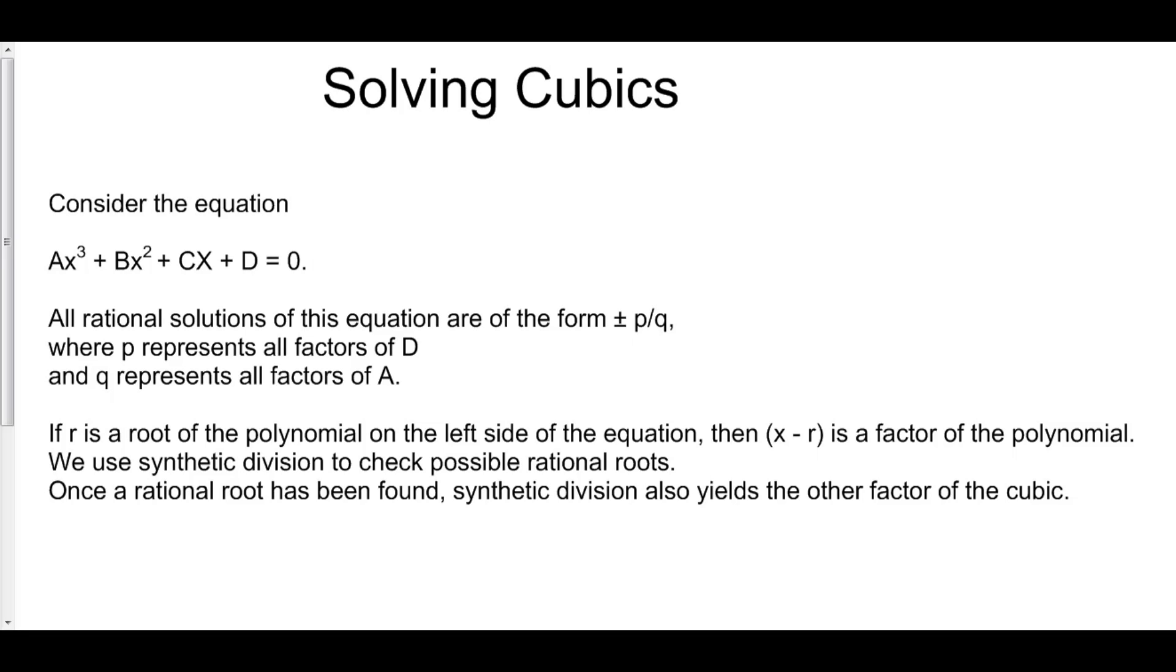Consider the equation ax³ + bx² + cx + d = 0. All rational solutions of this equation are of the form ±p/q, where p represents all factors of d and q represents all factors of a. If r is a root of the polynomial on the left side of the equation, then x - r is a factor of this polynomial.